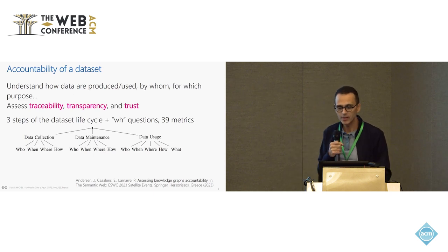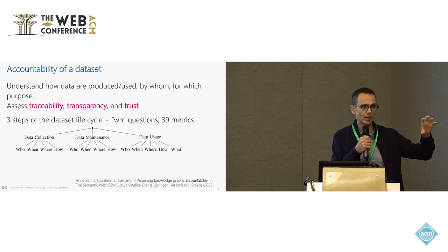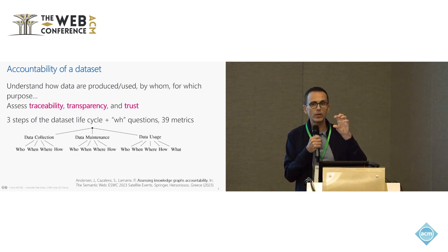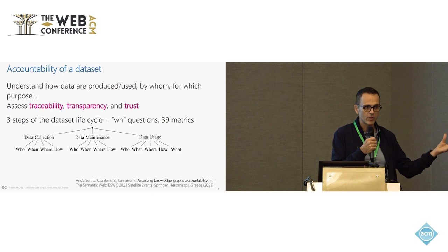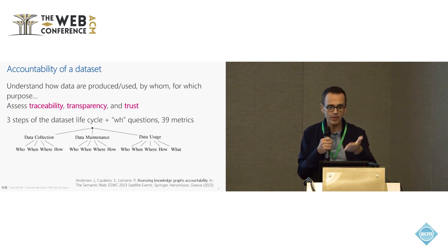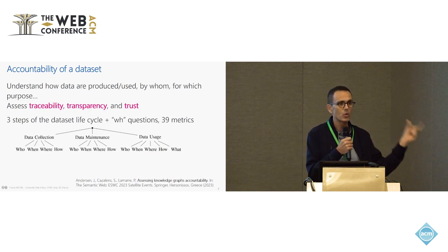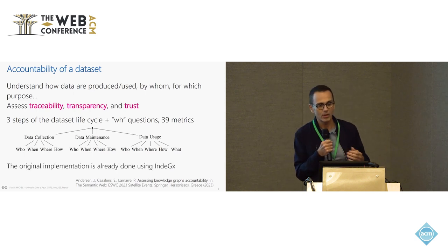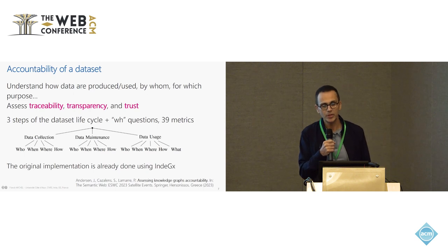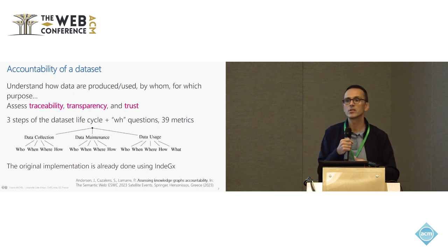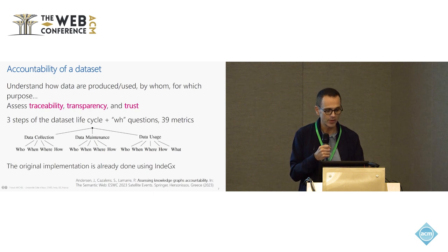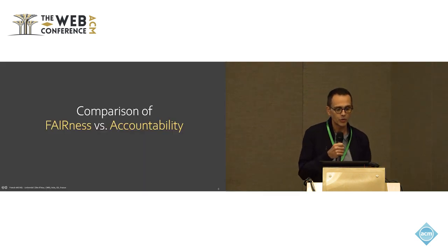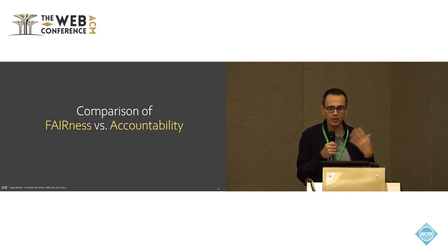To give an example: in the step of data usage, taking the 'who' dimension, one question would be 'who is the intended audience of this dataset?' What we do in the accountability measure is figure out whether, among the metadata, we find this information about the intended audience, and create a score accordingly. This accountability measure has been implemented in GINDEX — same thing, it consists of RDF descriptions and SPARQL queries.